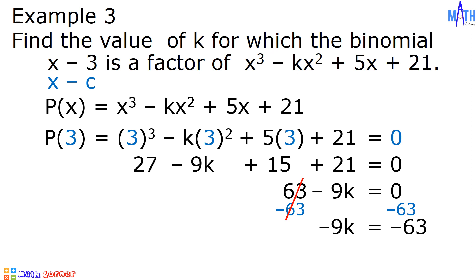And we have negative 9k is equal to negative 63. To solve for k, we need to divide both sides of this equation by negative 9. Negative 9k divided by negative 9 is equal to k. Negative 63 divided by negative 9 is equal to 7. Therefore, the value of k is equal to 7. And we are done discussing the factor theorem.